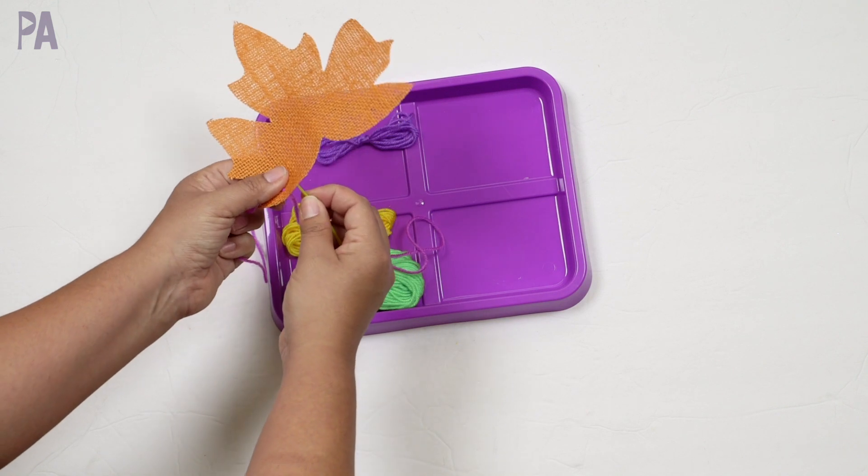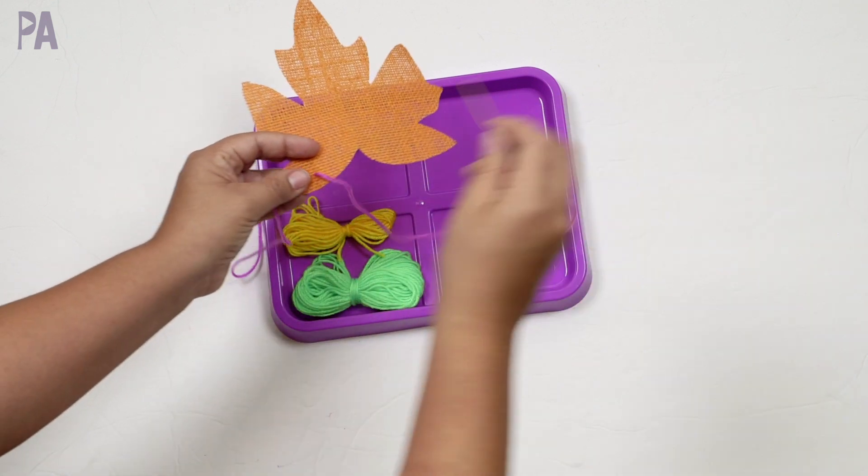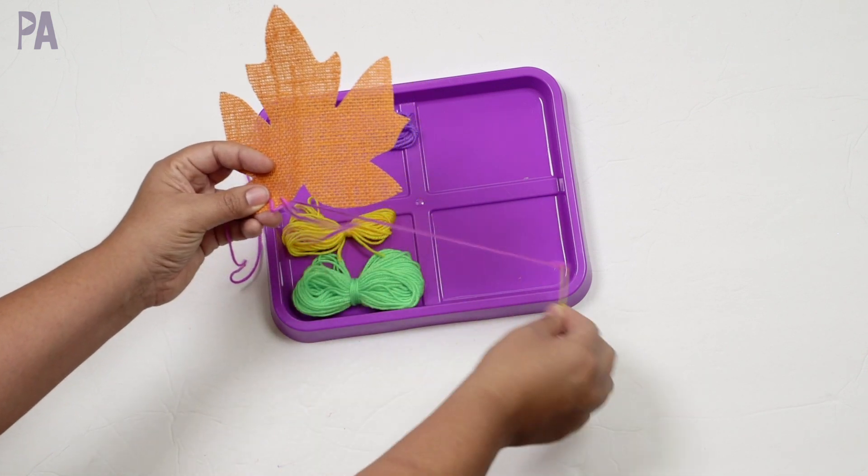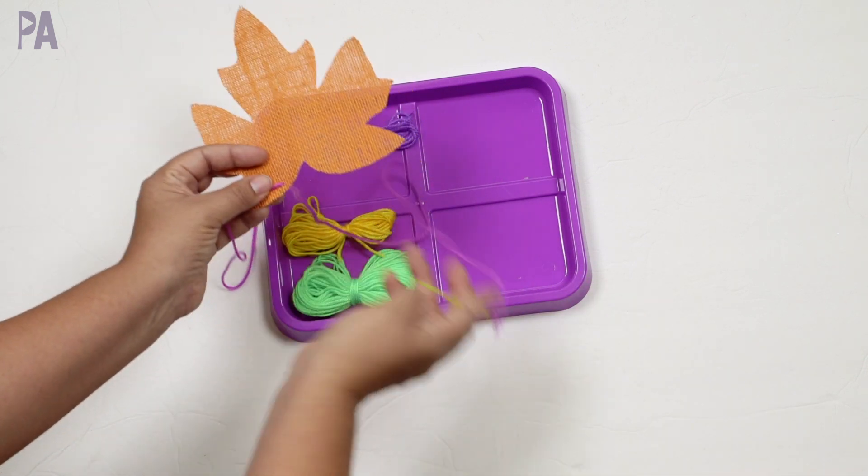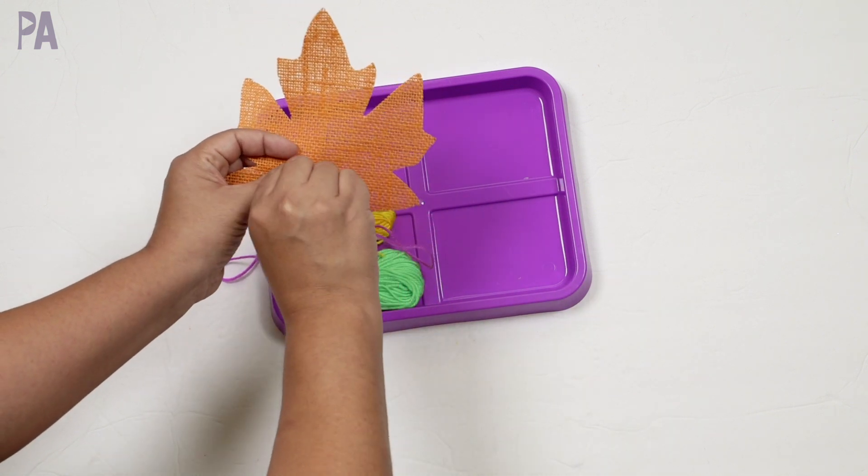Now your younger kids are just going to be poking this through wherever they can get it through. That's totally fine. Your older kids, they might be able to form around the edges and even older kids would be able to do it over and under around the edge.